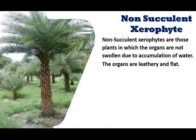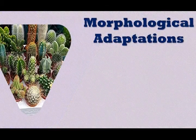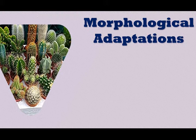Non-succulent xerophytes are those plants whose plant organs are not swollen due to accumulation of water. The plant organs are usually hard, leathery, and flat. Examples of non-succulent plants are date palms, toddy palm, and Casuarina. In order to survive in such harsh conditions, xerophytic plants develop certain adaptive features.